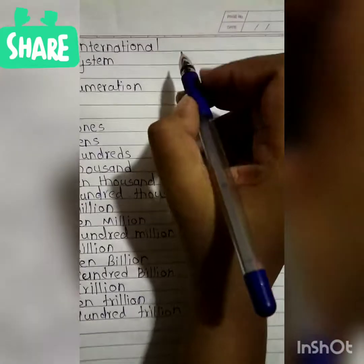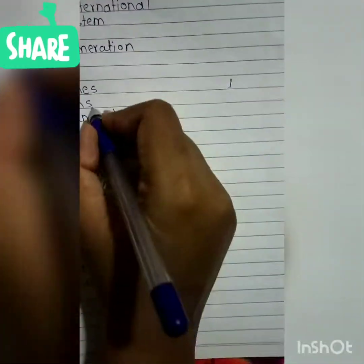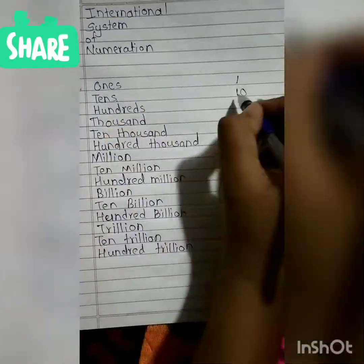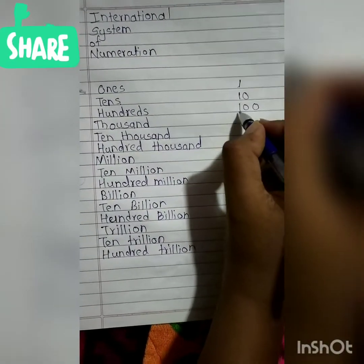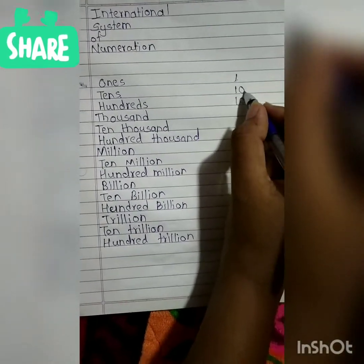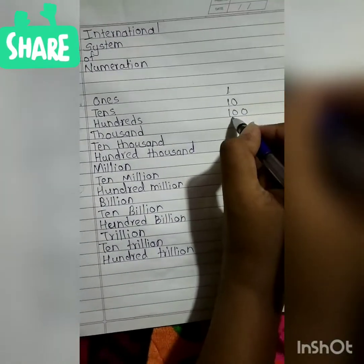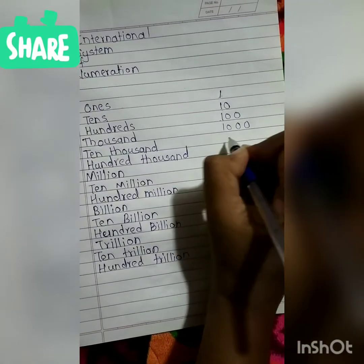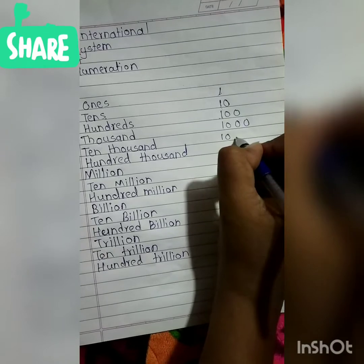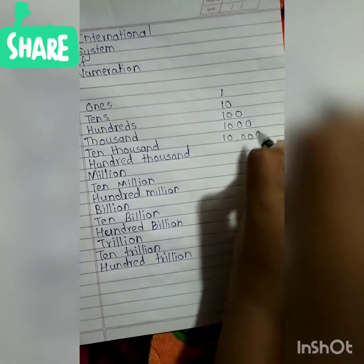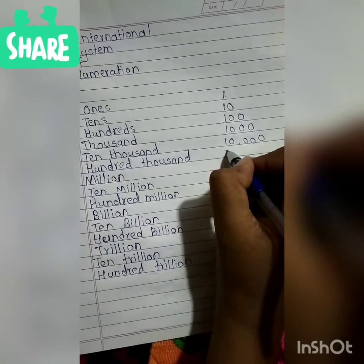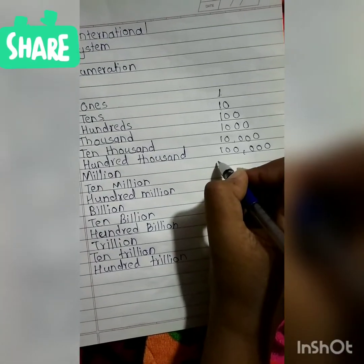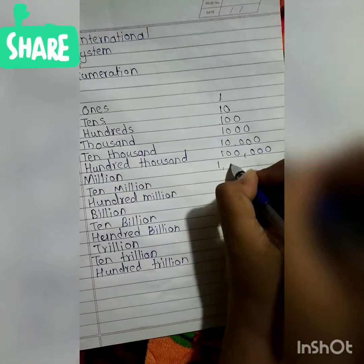So in the international system: 100 is 1 with 2 zeros, 1,000 has 3 zeros, 10,000 has 4 zeros, 100,000 has 5 zeros, and 1,000,000 is one million with 6 zeros — and so on up to hundred trillion.